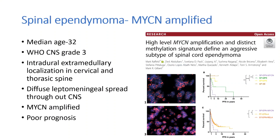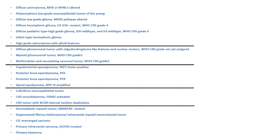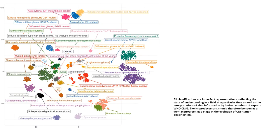Spinal ependymomas with MYCN amplification are aggressive tumors seen in adults with a median age of 32. They are high-grade tumors that arise in the cervical and thoracic spine, present with diffuse leptomeningeal spread throughout the CNS, and have a very poor prognosis — the worst among all ependymomas, even more aggressive than posterior fossa A and supratentorial ZFTA ependymomas. Out of the 22 new types added to the recent WHO classification, 14 belong to the category of Gliomas, Glioneuronal Tumors and Neuronal Tumors. The marvel of modern medicine lies in demystifying the mutations and molecules behind the morphology. Thank you very much for your attention.